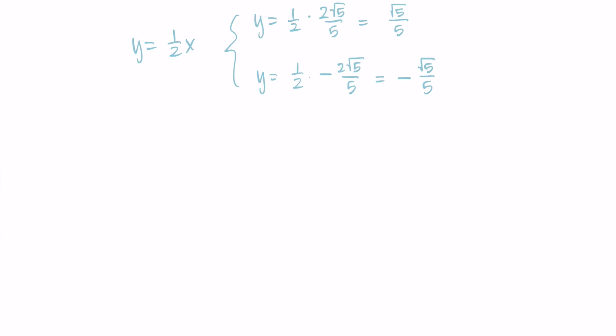So I can put these together in vectors. It's a mouthful to read, but I'm going to try my best. So we have the vector 2 root 5 over 5, root 5 over 5, and the vector negative 2 root 5 over 5, negative root 5 over 5, are the unit vectors that are perpendicular to the vector negative 1, 2.